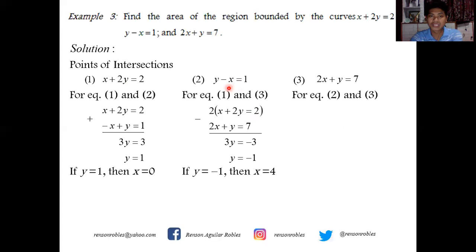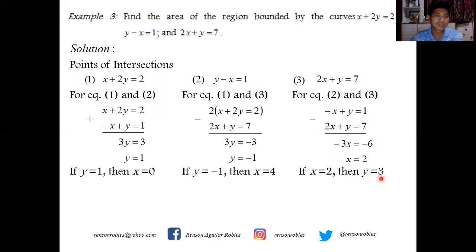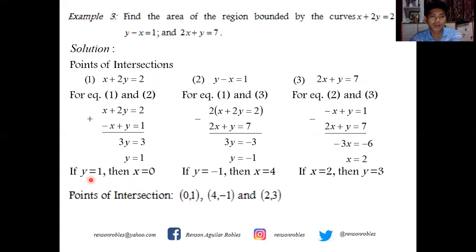For equations 2 and 3: negative x plus y equals 1, and 2x plus y equals 7. Since both y coefficients are equal, subtract to eliminate y: negative x minus 2x equals negative 3x, and 1 minus 7 equals negative 6, giving x equals 2. Substituting x equals 2 gives y equals 3. So the intersection of equations 2 and 3 is (2, 3).